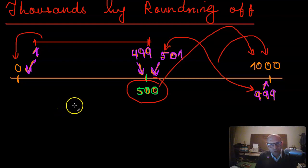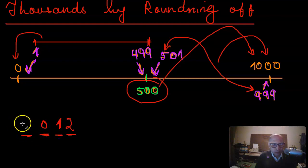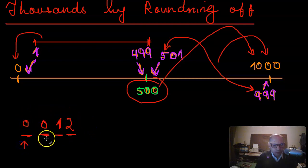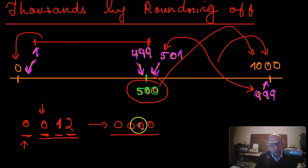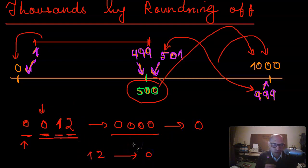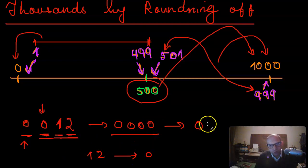The same applies to two-digit numbers. For example, with 12, the hundreds place is zero and the thousands place is zero. When rounding to the thousands place, the digit next to it is still zero, so you round down. All digits become zeros, giving zero. This applies to all two-digit numbers all the way up to 99.